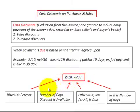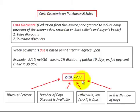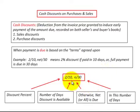The 2 represents the discount percentage, 10 would be the number of days available for the discount, and otherwise you have to pay the rest within 30 days. So an example would be: if you owed $100 and paid it within the first 10 days, you'd only have to pay $98 — a 2% discount.